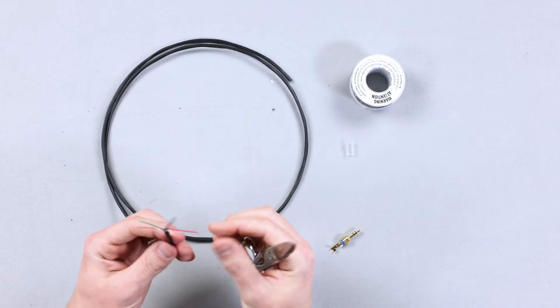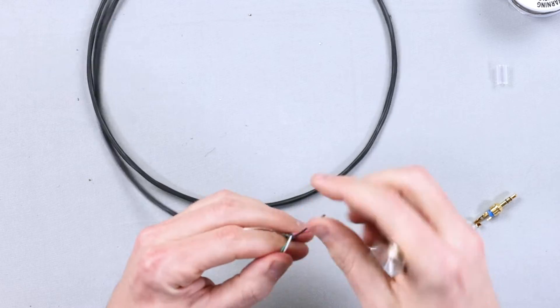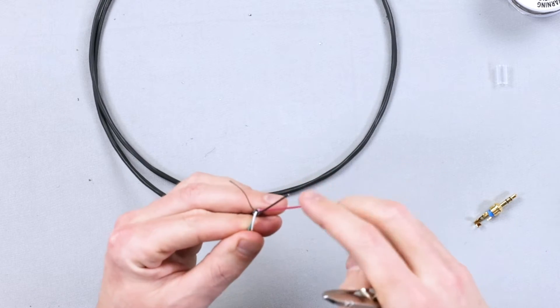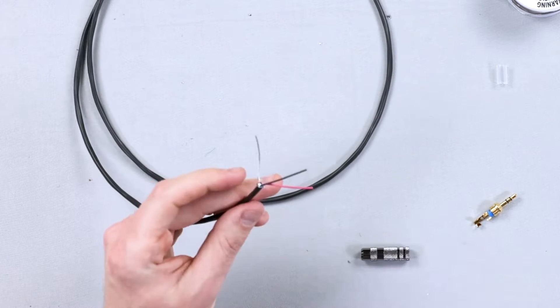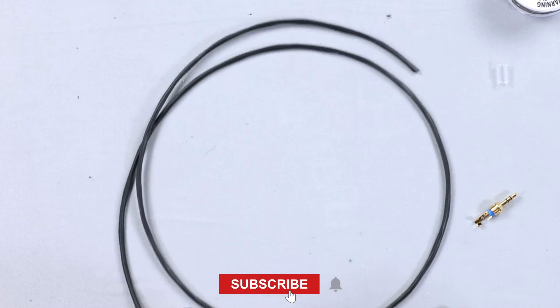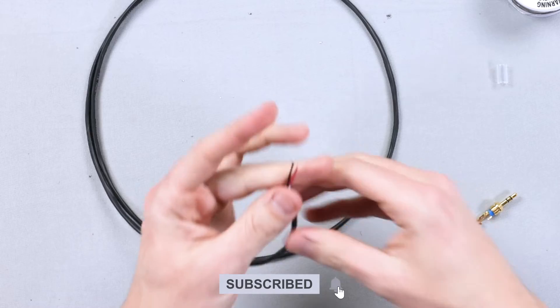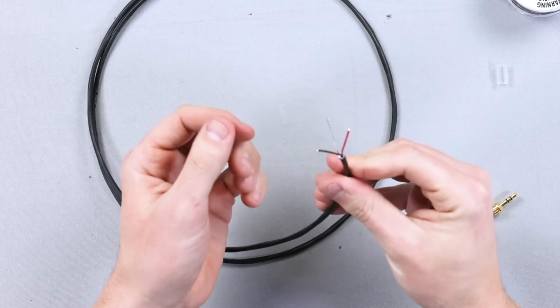So now our wire looks something like this. We don't need the white and the green, because we only need the ground, and then the red and the black for our conductor. So just cut the white and the green out, no big deal. These are a little long. I'm going to shorten them up, and I will end up shortening them up again, but this is what you're left with. You're left with a red, a black, and a ground.